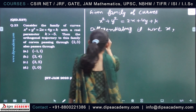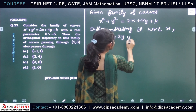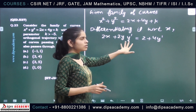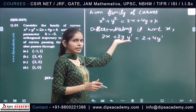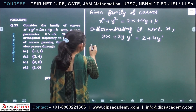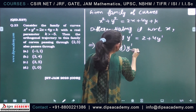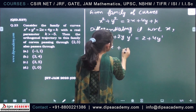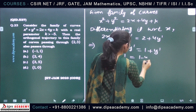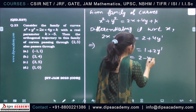Differentiating with respect to x, we get 2x + 2y·y' = 2 + 4y', and k drops out to 0. This simplifies to x + y·y' = 1 + 2y', which rearranges to x − 1 = (2 − y)·y', giving us the differential equation y' = (x − 1)/(2 − y).